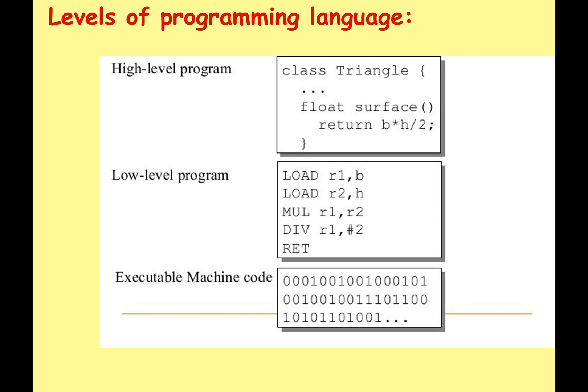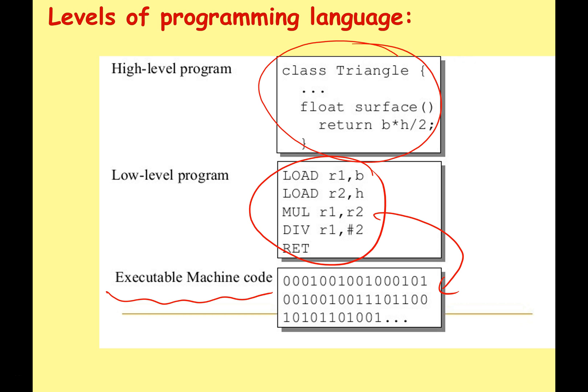You have to think about levels of programming language. At the bottom we have machine code — the only thing your computer will understand: zeros and ones, binary. But this is really difficult for people to understand or work with. So we developed things like assembler, which is still pretty difficult but uses some letters and words, making it a bit more understandable. We've also developed higher-level languages like Python, C++, and Java. But of course everything has to be converted into machine code before it can be run.